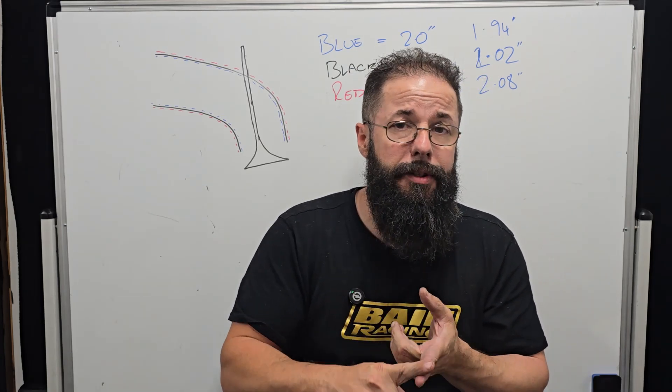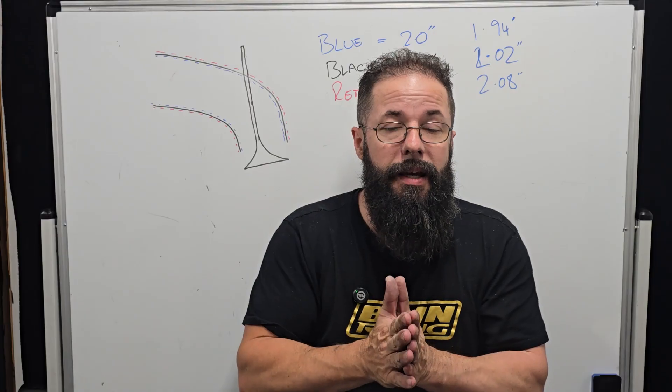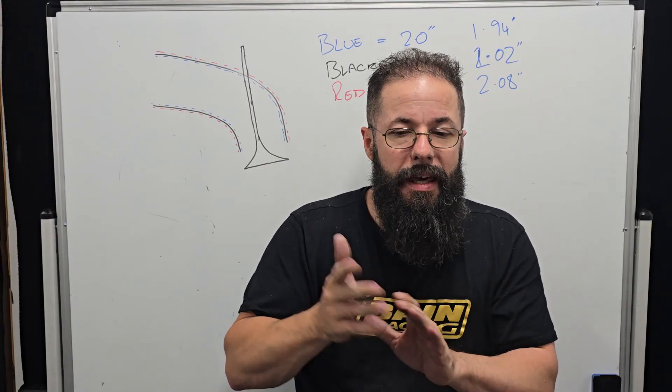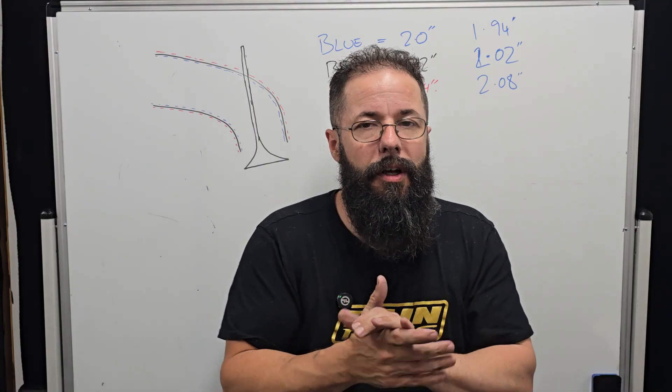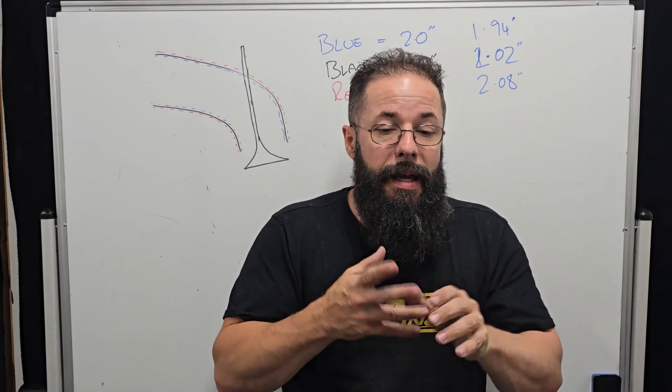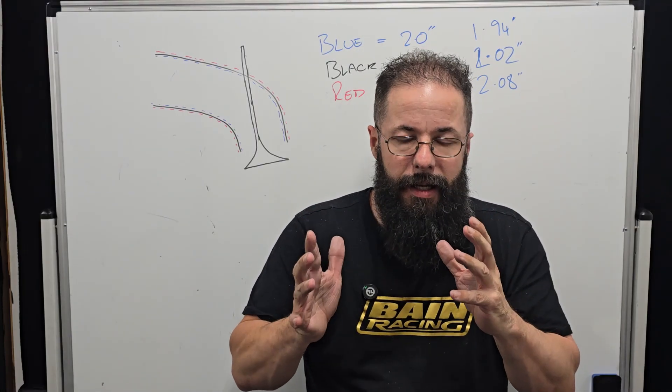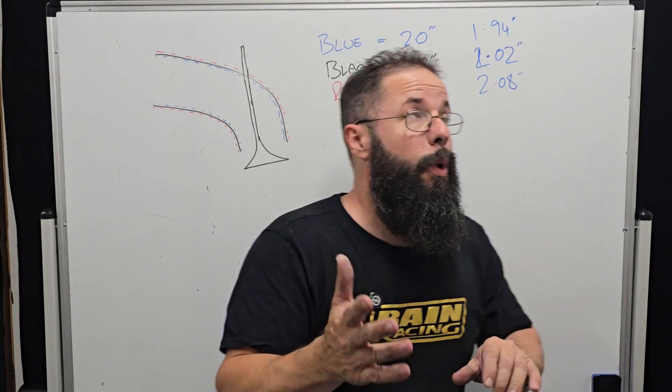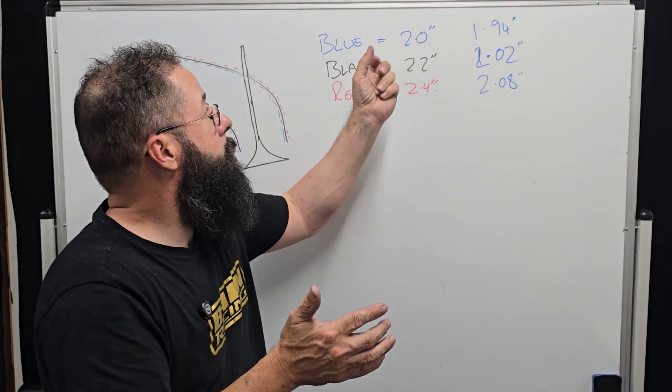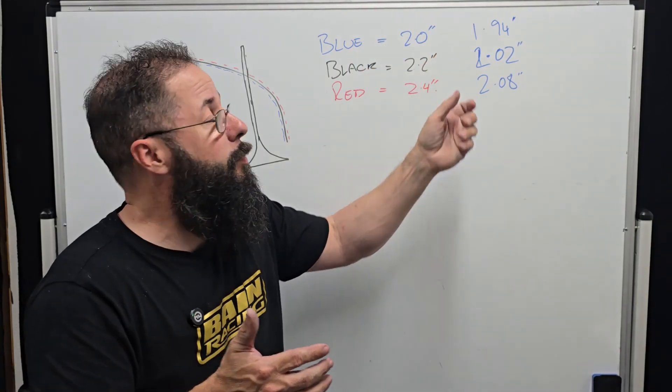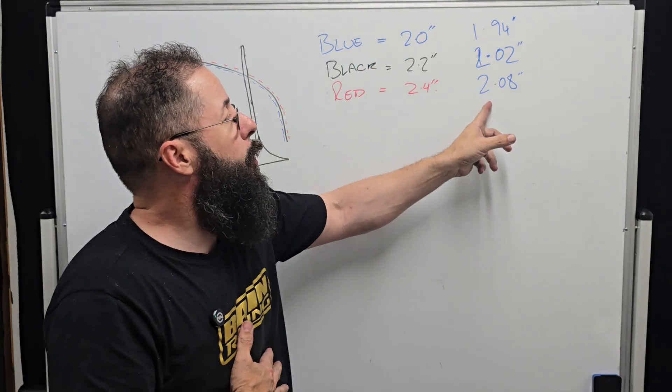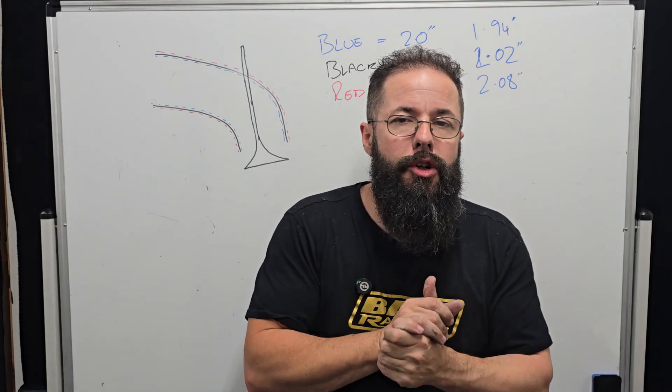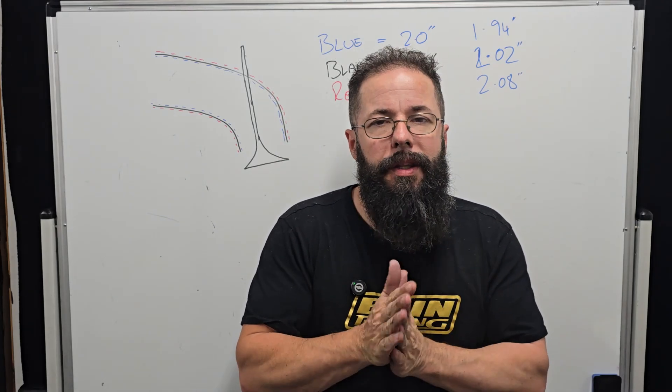Making sure we size the port to the engine. So again, this is where flow benches will lead you up the garden path if you're not focusing on the size. And like I've talked about in our porting series, understanding that CSA gradient. We could take the blue port, which is the smallest port, put a 208 valve in it and it's going to flow better. It's going to look better on the flow bench. It's going to be horrible on the engine.